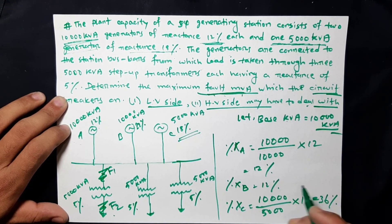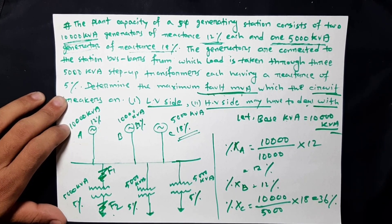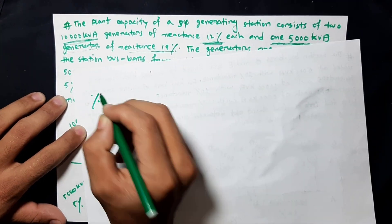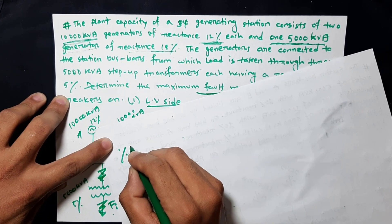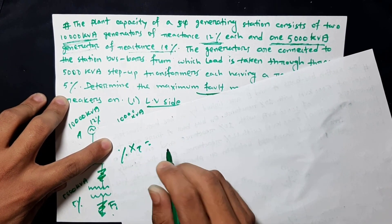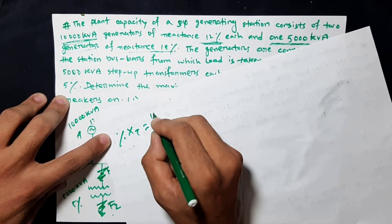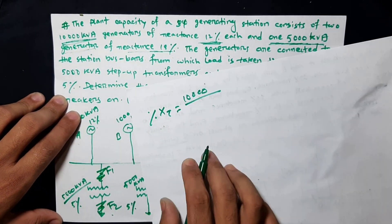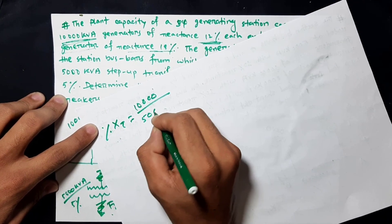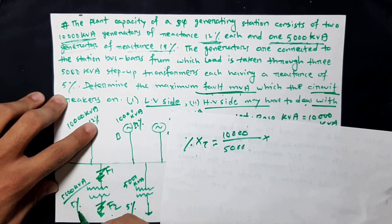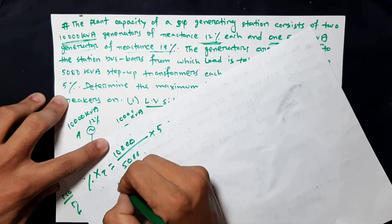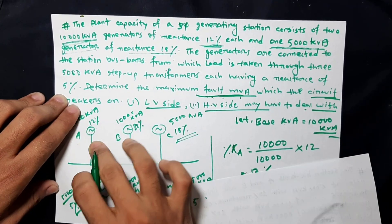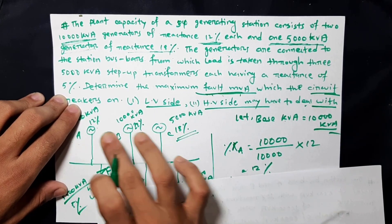Now for the transformer: percentage reactance of transformer XT at base KVA. Base KVA is equal to 1000, rated KVA is equal to 5000, percentage reactance at rated KVA is equal to 5%. The value is equal to 10%. So all values are converted to base KVA percentage reactance.